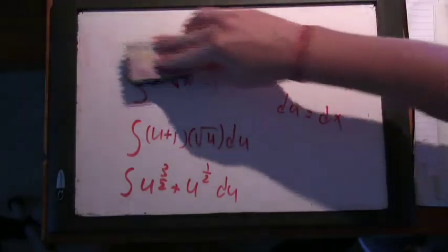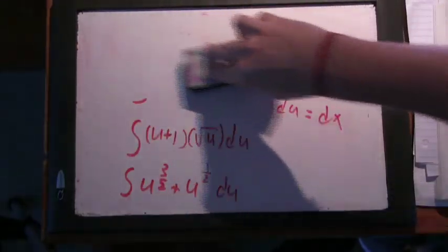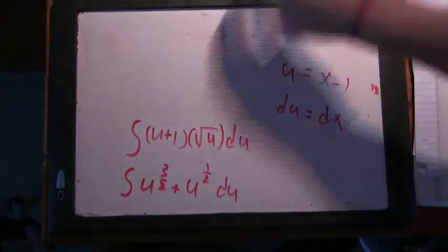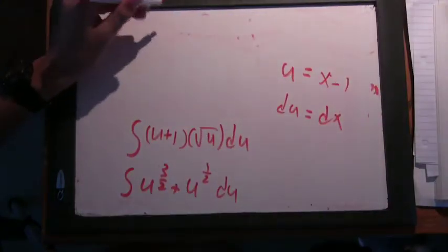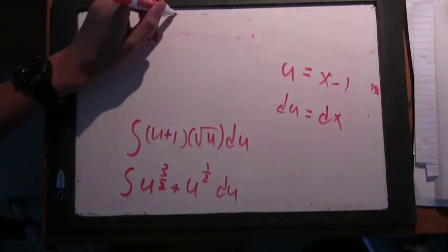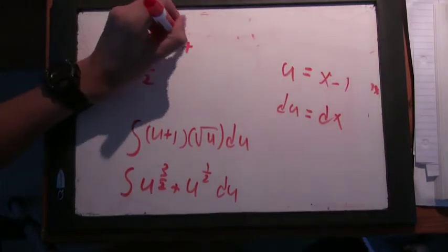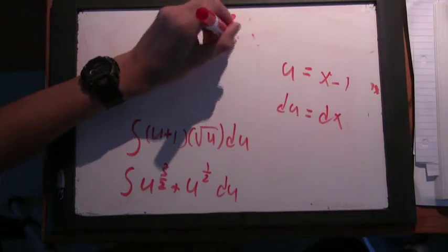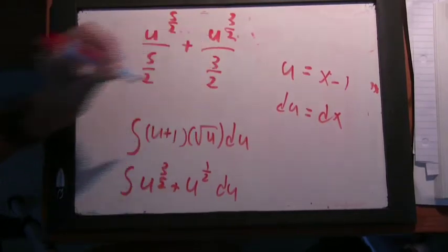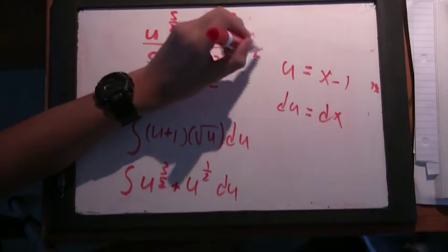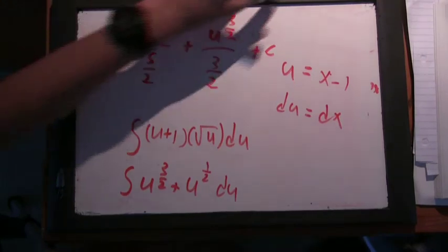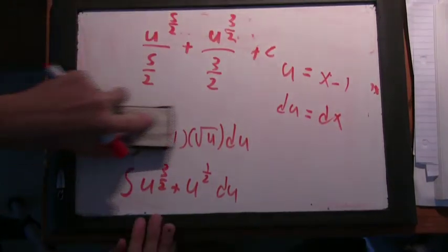So why don't you loop up to the top here. What is this integral? This is u to the 5 halves over 5 halves plus u to the 3 halves over 3 halves.